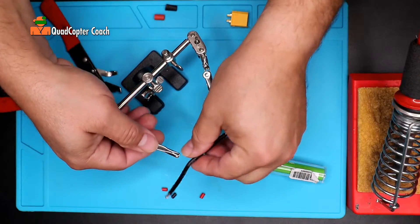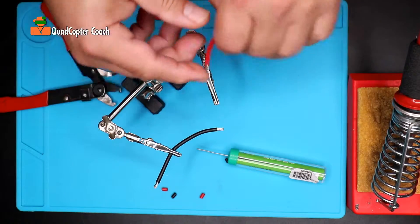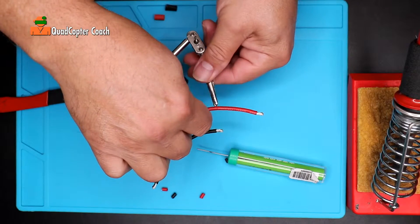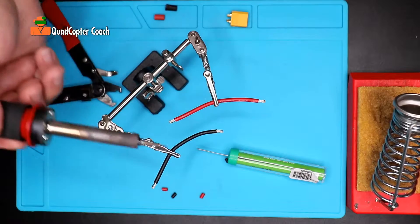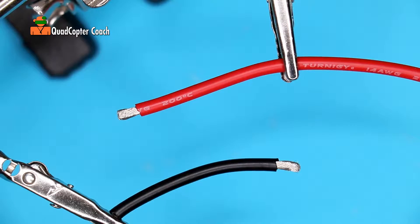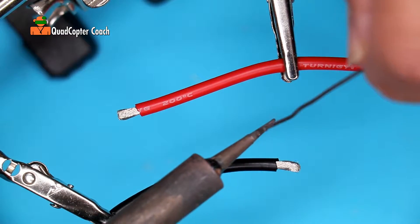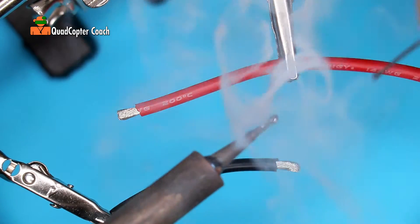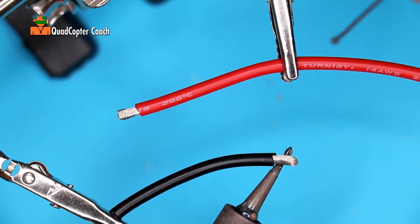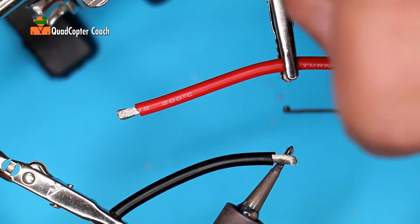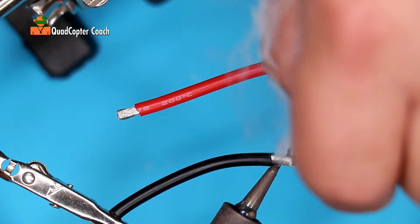Next step is to take our helping hands and just clip your wires in there. Make sure that the tips are nice and tight. Take your soldering iron. I like to take my soldering iron and just put some solder on there first just to get it started, and apply it under the wire. Give it a few moments to warm up, and just apply some solder there.